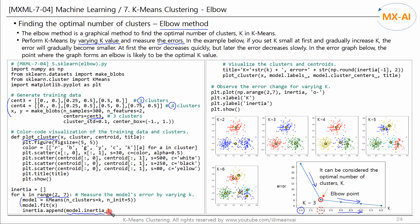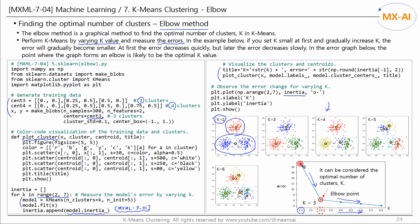We looked at the concept of errors for unsupervised learning in the first video. Color code and visualize the training data points and their clusters, and observe the change in error with the change in k. When k is 2, the data is clustered into two groups like this, and the error for this clustering is this much.